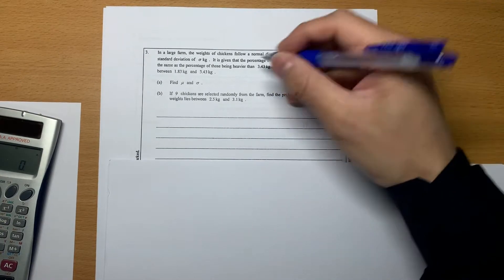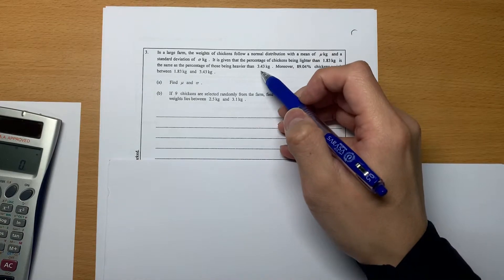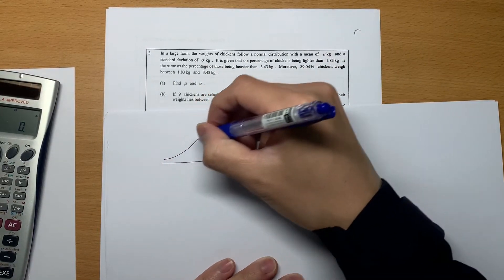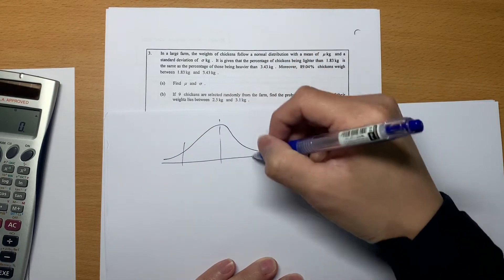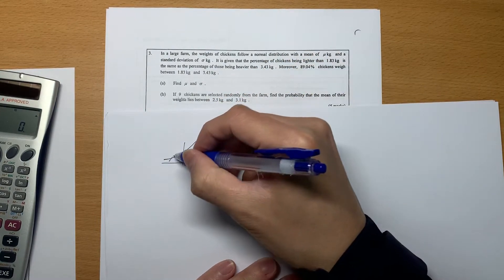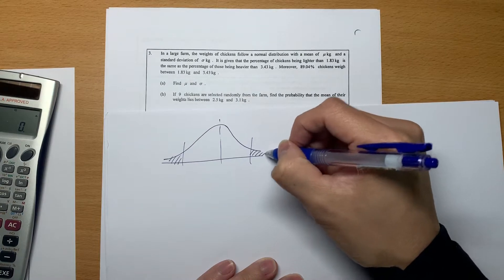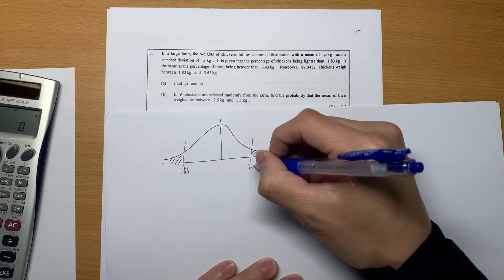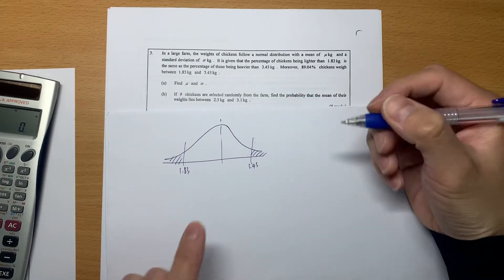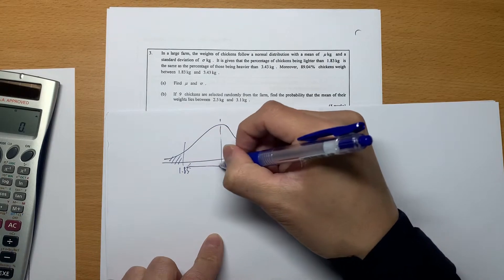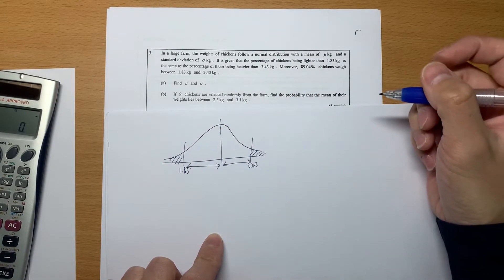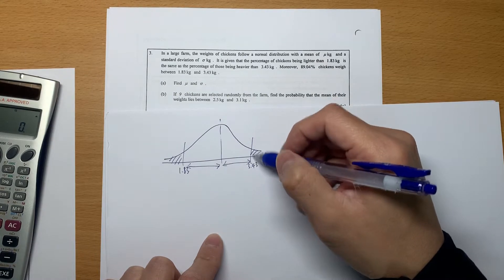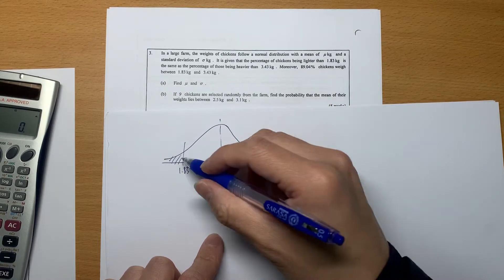This sentence says the left hand side and right hand side are basically the same. The only possibility is it should be symmetric - this area and this area are the same. The boundary is 1.83 and 3.43, which implies that the width here is also the same. The z-score values are the same, just the sign are different.